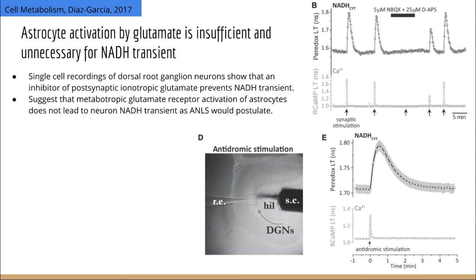Next, the researchers wondered if blocking action potentials in neurons but not astrocyte activation would affect NADH transients. The idea is that if lactate derived from activated astrocytes is fueling NADH transients, then blocking neuronal activation but not astrocyte activation should allow the NADH transients to persist. But they didn't see this. When they blocked action potentials, there was no NADH transient — even though astrocytes are activated and lactate is being spewed into the extracellular space, there's no NADH transient.